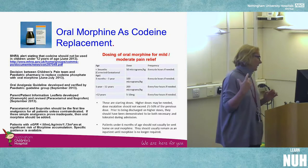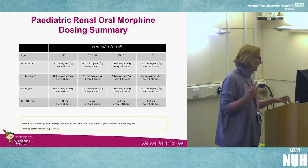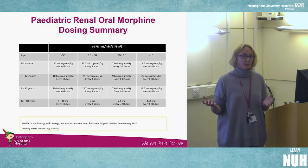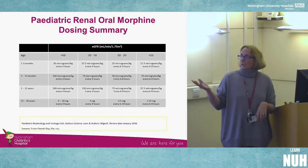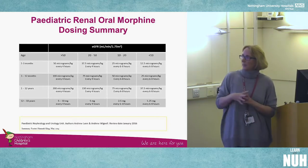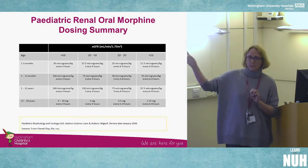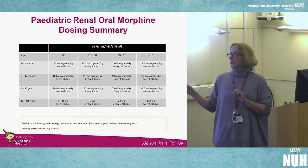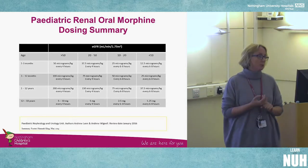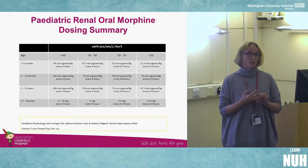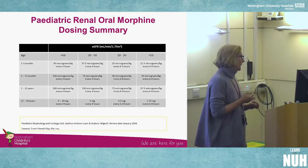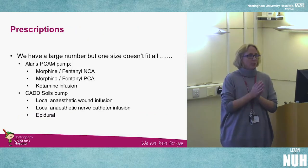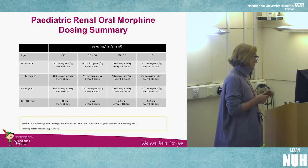As a renal centre we get many children with renal impairment, some on end-stage dialysis. Working with the renal team, we developed a table combining age and estimated GFR — which should be on our notes. If a renal child comes to theatre, the renal team should write their eGFR on the drug chart. You can then use this to calculate a reduced morphine dose, and the dosing interval may also be prolonged. If oral medication isn't appropriate, move to IV fentanyl PCA or NCA.